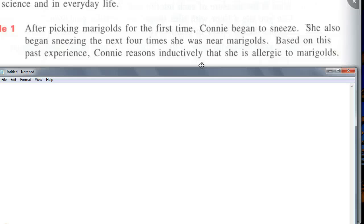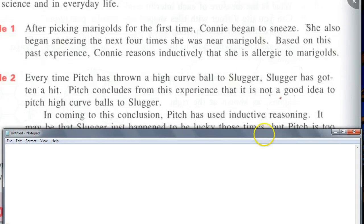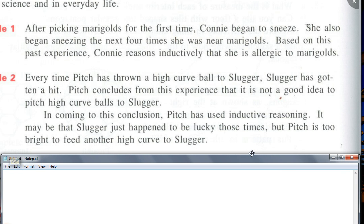Anybody like baseball? Who likes baseball? Jed, can you read this for us? Every time pitch has thrown a high curve ball to slugger, slugger is hit when out. Pitch concludes from his experience that it's not a good idea to pitch high curve ball to slugger. In coming to this conclusion, pitch has used inductive reasoning. It may be that slugger just happened to be lucky those times, but pitch is too smart to even risk the high curve. Okay, so again what is this decision based on? Inductive reasoning. Past experience, yeah. So inductive reasoning you should think about as past experience and so forth.